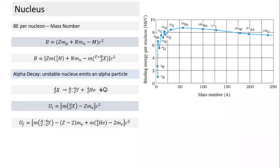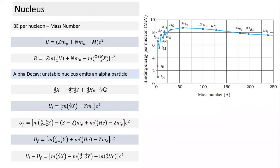We calculate the difference between Ui and Uf. The mass of electrons cancels out perfectly, giving a simple equation. In alpha decay, the Q value equals atomic mass of the parent minus atomic mass of the daughter minus atomic mass of the alpha particle, all into c squared. We can directly use atomic masses for convenience, since adding electrons converts nucleus mass into atomic mass.